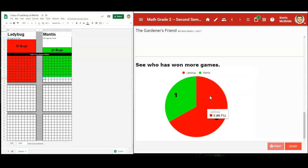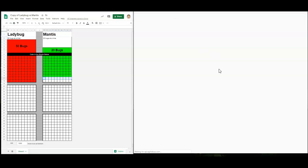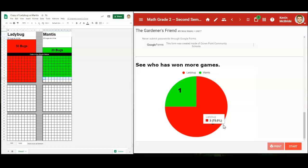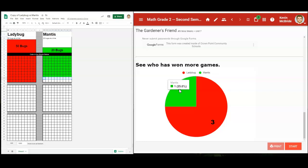If I scroll down even more, I can see who has won more games overall. Every time you refresh this page, that graph is going to change a little. Three times that I've played, it's been the ladybug who won and one time the mantis won.